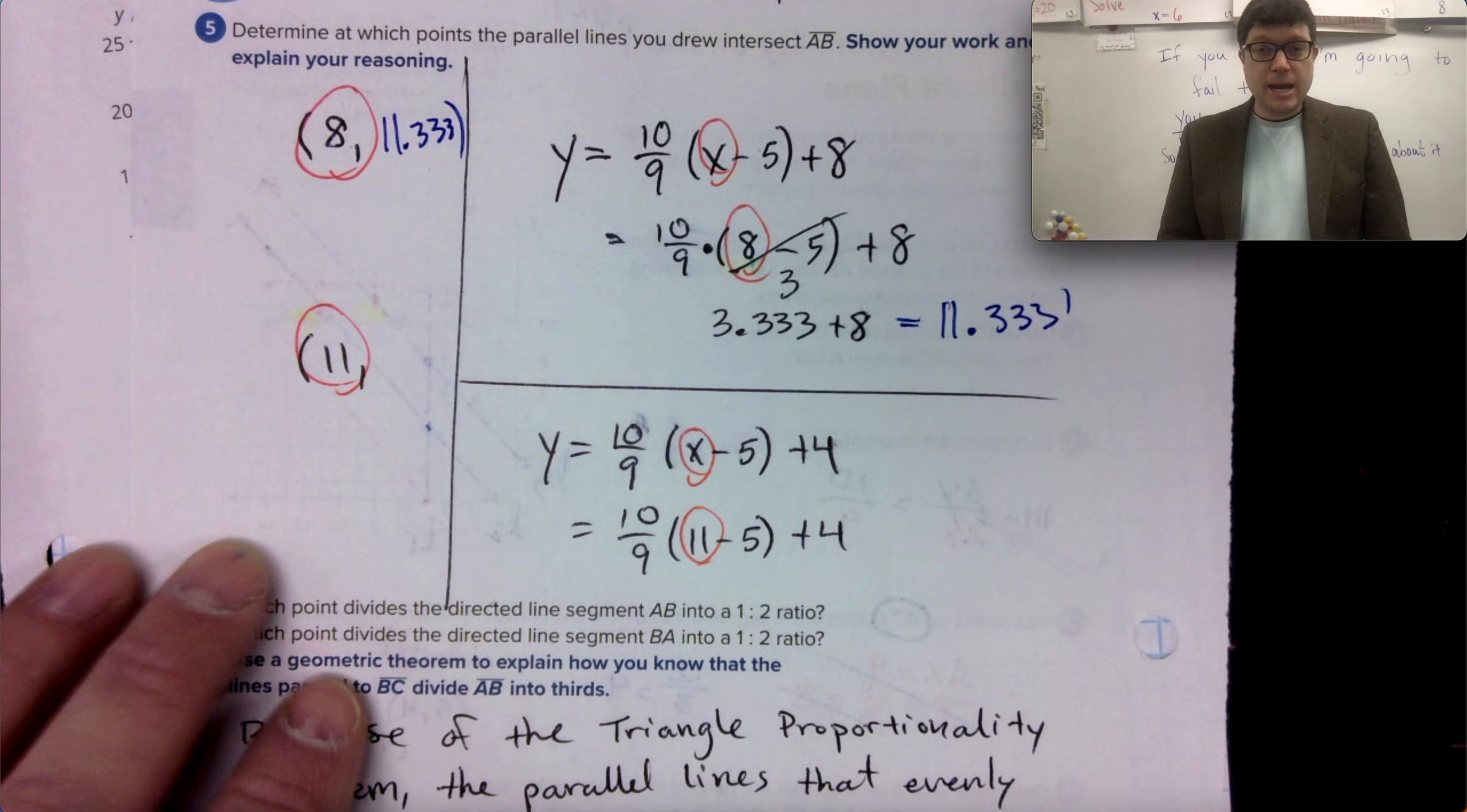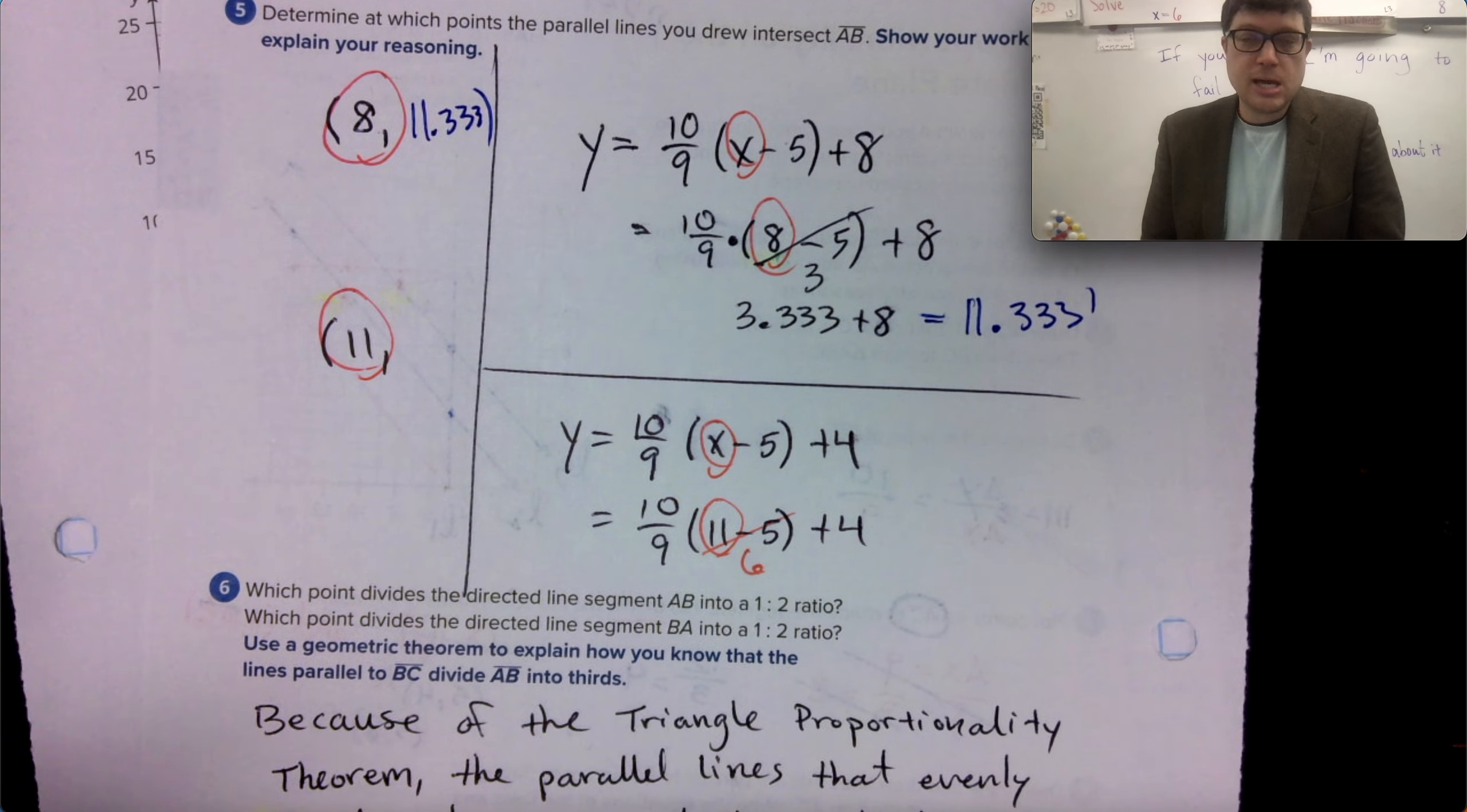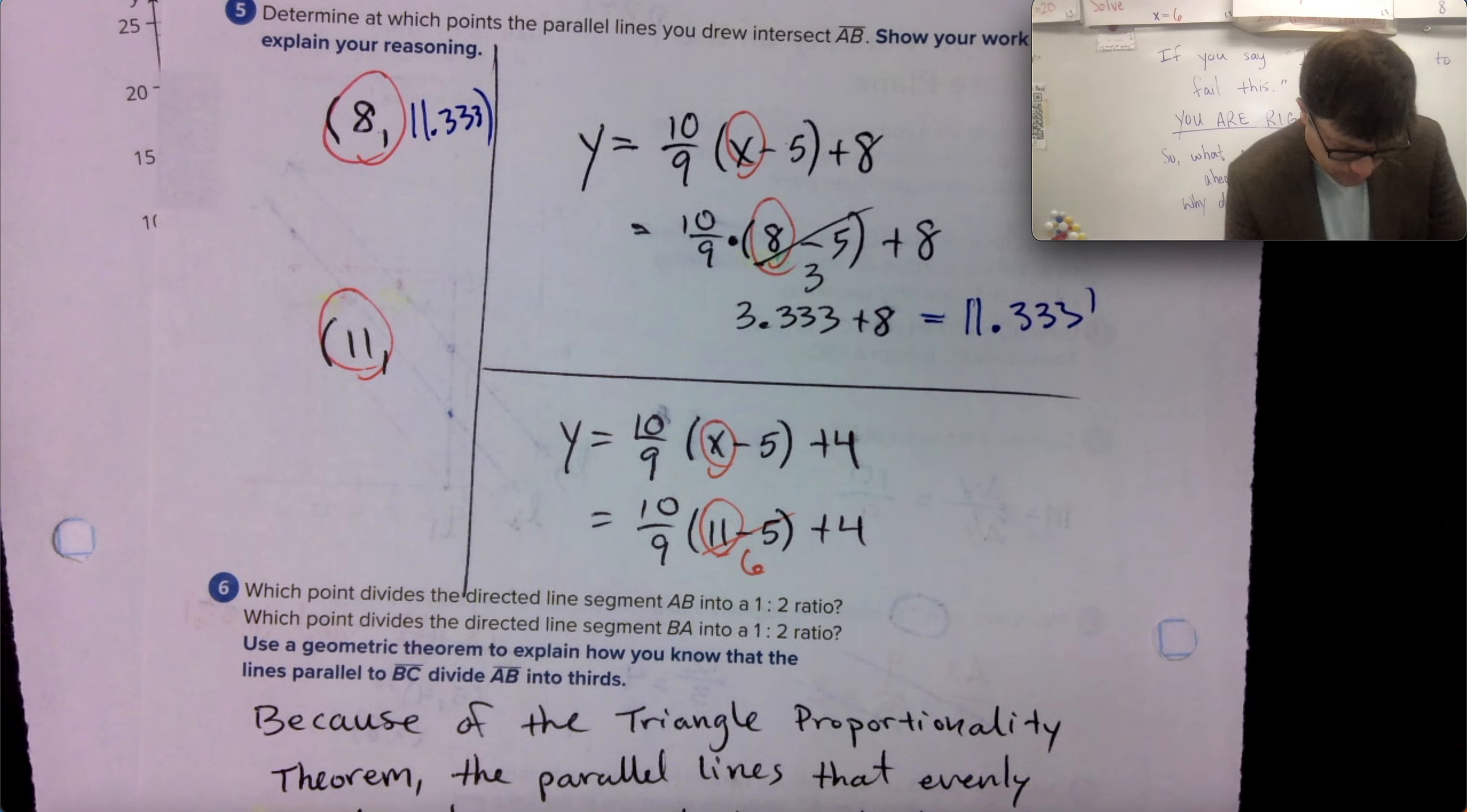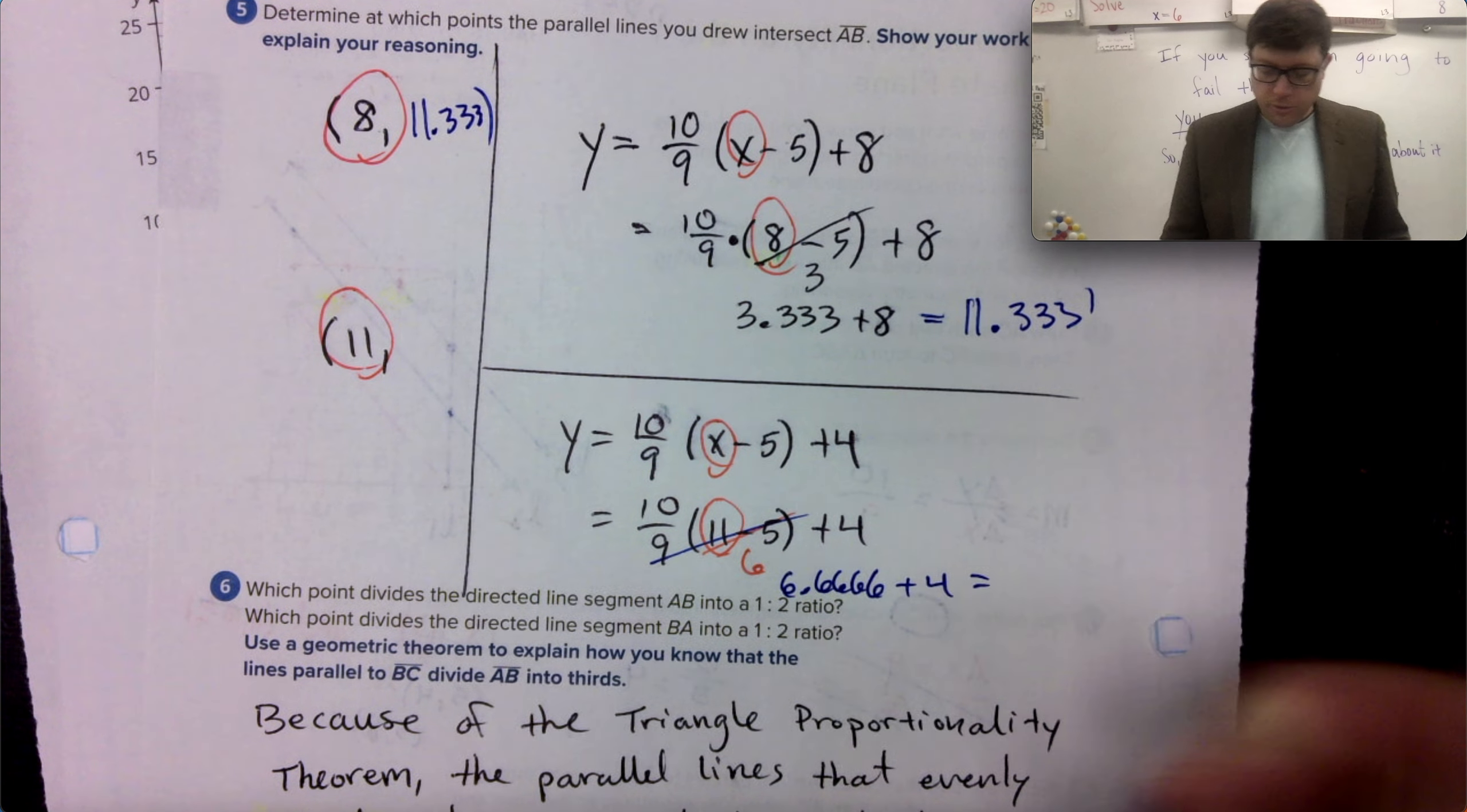Order of operations. Mathematics will tell us that 11 minus five makes six. And 10 ninths times six. Hey Siri, what's 10 ninths times six? 10 over nine times six is approximately 6.6666. We're going to add four to that. Hey Siri, add four to that answer.